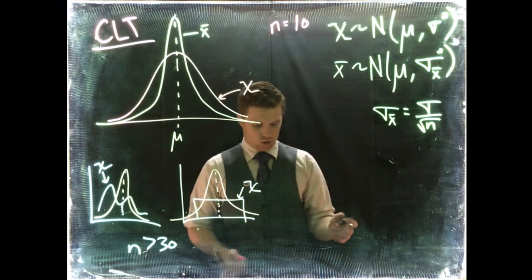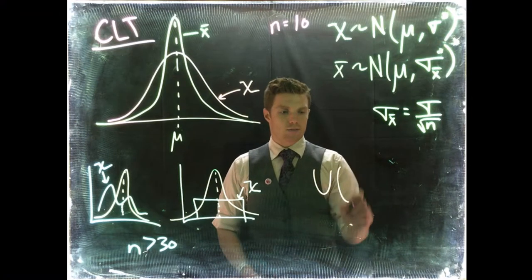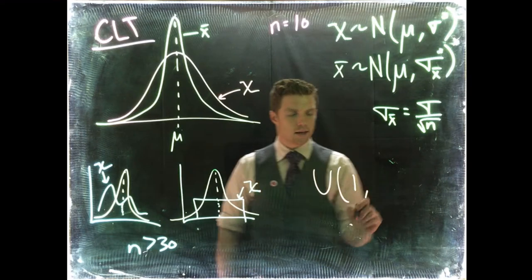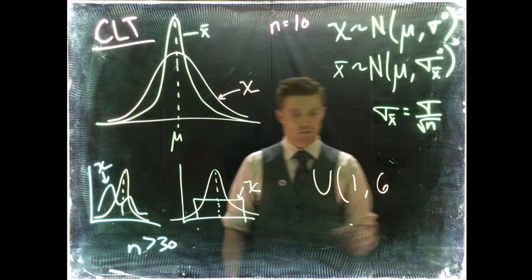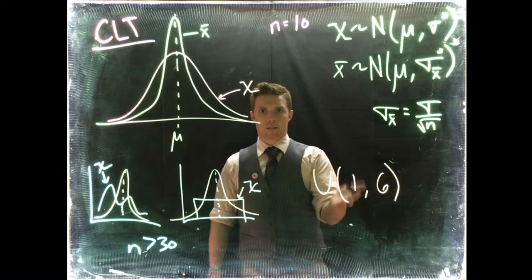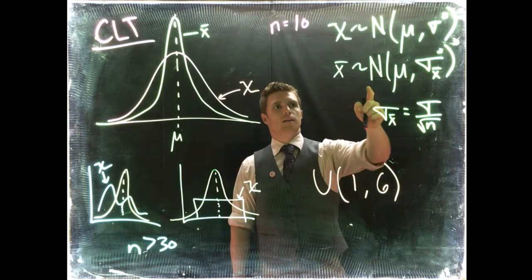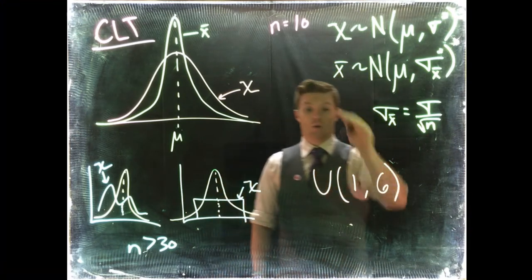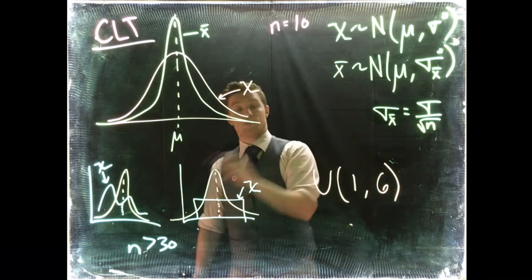So let's say our distribution here is uniform, and we're given a maximum and a minimum, like 1 comma 6. All we have to do is figure out what is the mean and what's the standard deviation. And then we can say that the sample means are going to be normally distributed, as long as we have a big enough sample size.